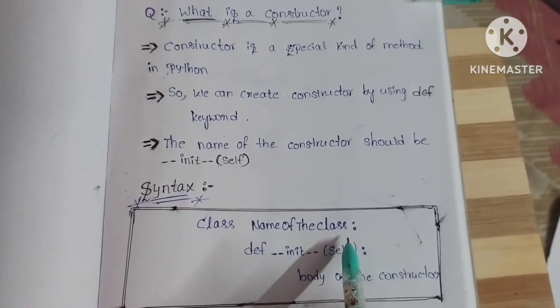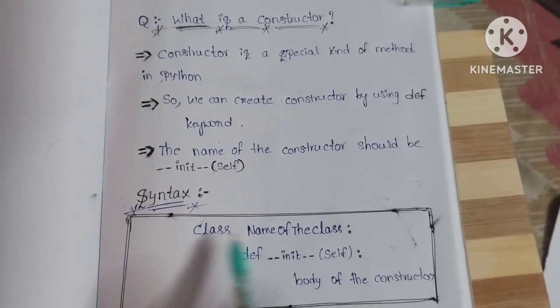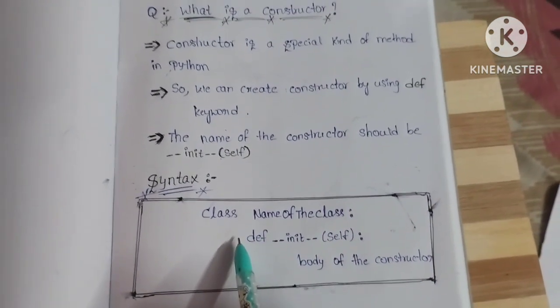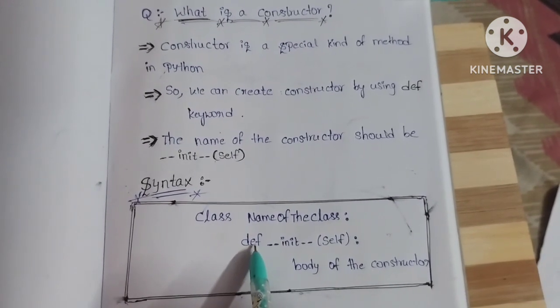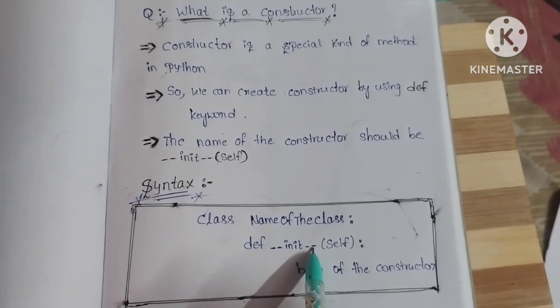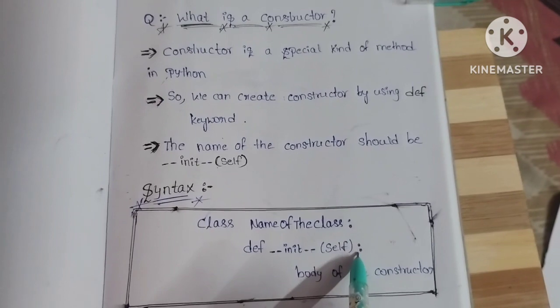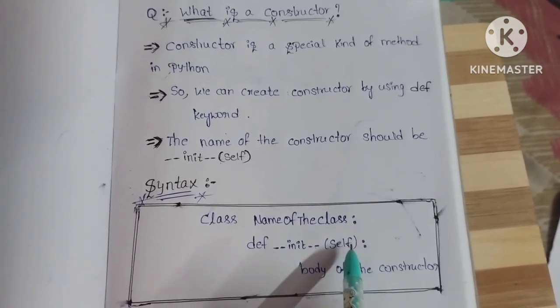After colon symbol, we should give one indentation. After indentation, we should write the def keyword. After def keyword, we should write the name of the constructor. After the name of the constructor, again we should give colon symbol.